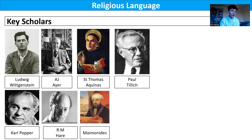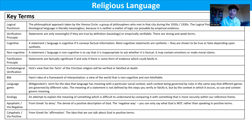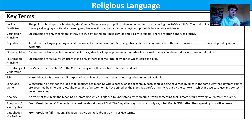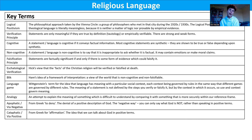Logical positivism is a really important philosophical approach taken by a group of philosophers known as the Vienna Circle, very creatively named because they were based in Vienna and met there in the 1920s and 30s. They decided that theological language — anything where someone is talking about God, saying that God is love, for example — is meaningless, because it is neither a matter of logic, true a priori, nor provable by empirical evidence, true a posteriori. And so they devised the verification principle.